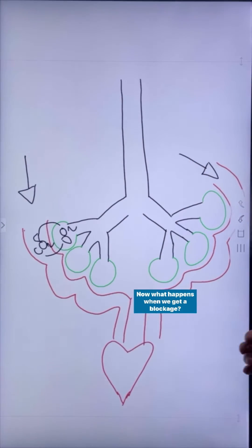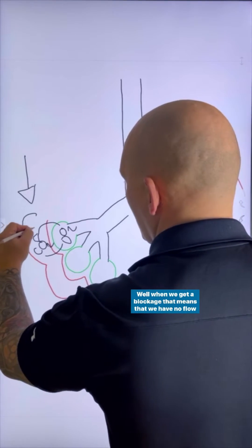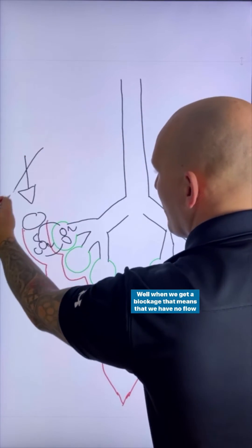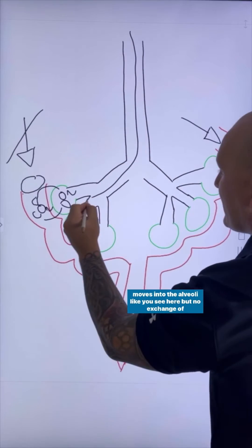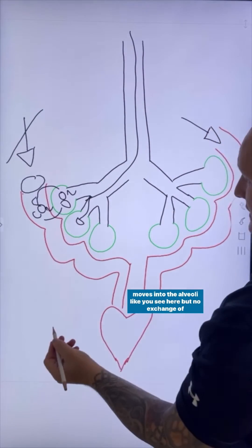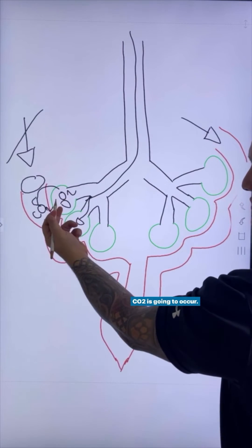Now what happens when we get a blockage? Well, when we get a blockage, that means that we have no flow past the alveoli here. And so what essentially occurs, air that moves into the alveoli like you see here, but no exchange of CO2 is going to occur.